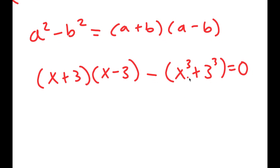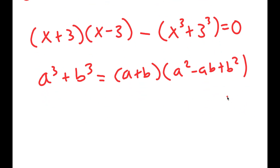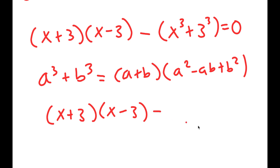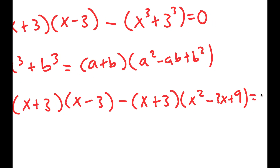Now from here, x cubed plus 3 cubed — I can rewrite this as a plus b times a squared minus ab plus b squared. So this turns into x plus 3 times x squared minus 3x plus 9, is equal to 0.